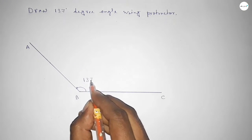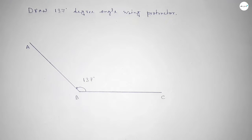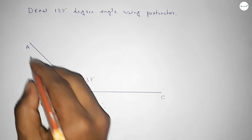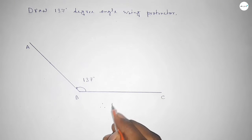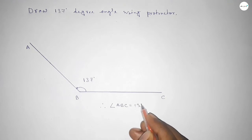Therefore, angle ABC up to this, so angle ABC equals 137 degree angle.